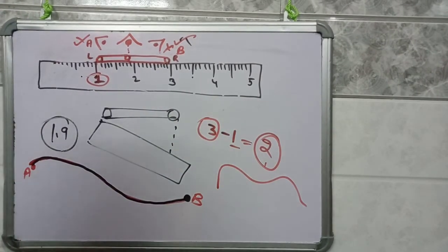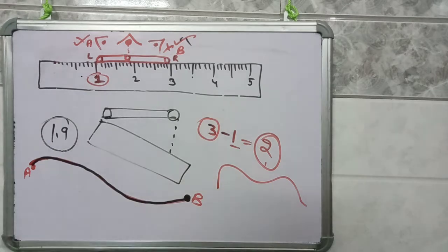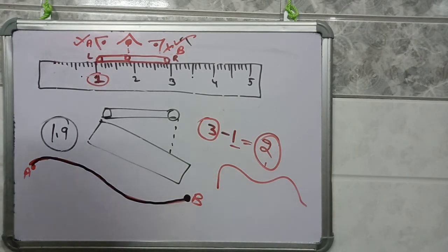You will be able to find out the length of this curvy line. So this was all about the motion and measurement of distance. This chapter is completed. Thank you.